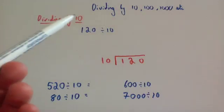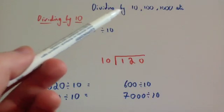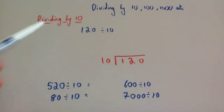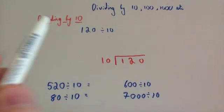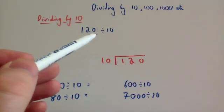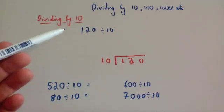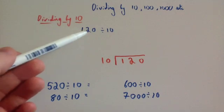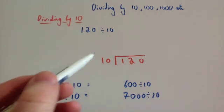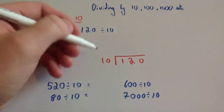In this video we're going to look at how to divide by 10, 100, 1000, etc. So let's start off by dividing by 10. We're going to divide a number that ends in a zero by 10, so we're going to divide 120 by 10. I'm going to start off by doing short division.